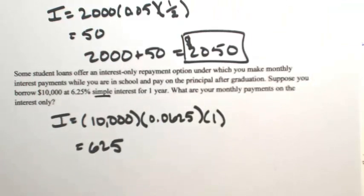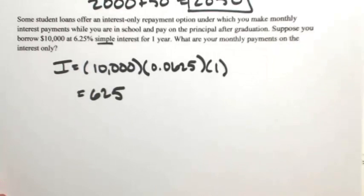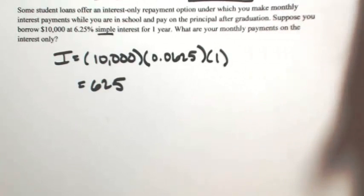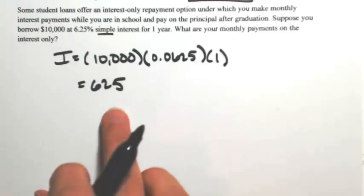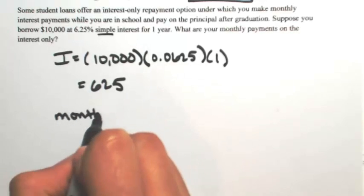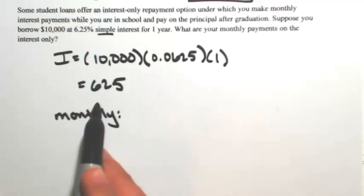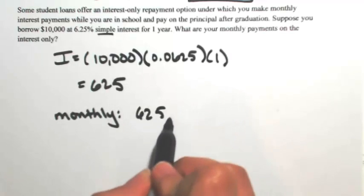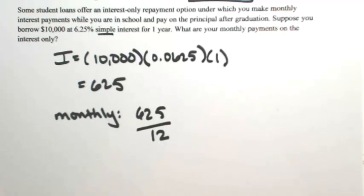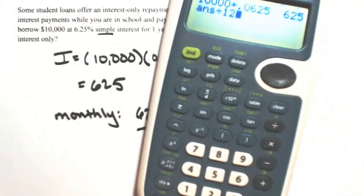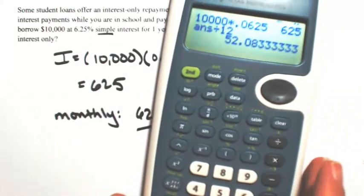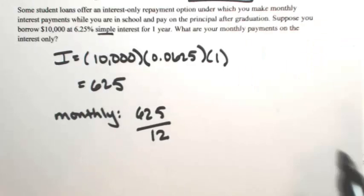So for the entire year, you would owe $625 in interest. So if you're making monthly payments on the interest only, then monthly, if you're paying $625 for the entire year, you would divide that by 12 months. So every month, you're going to pay about $52.08.